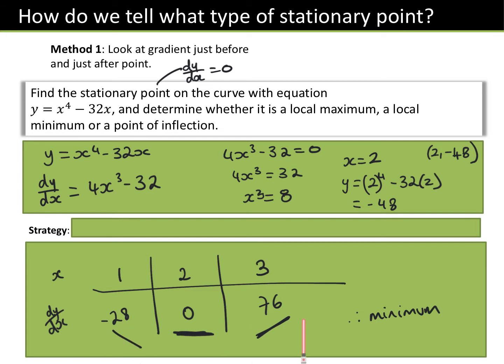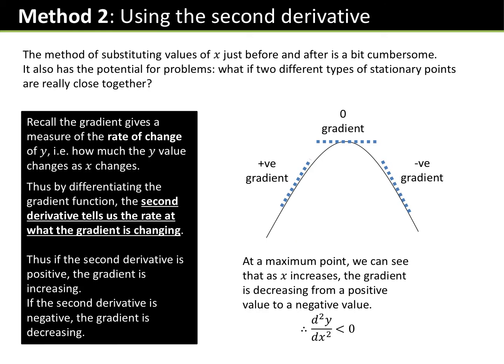This is one strategy, but there is another way — we can actually differentiate again. However, be careful: if two stationary points are really close together, substituting nearby values might give misleading results. Using the second derivative will always give the correct answer.